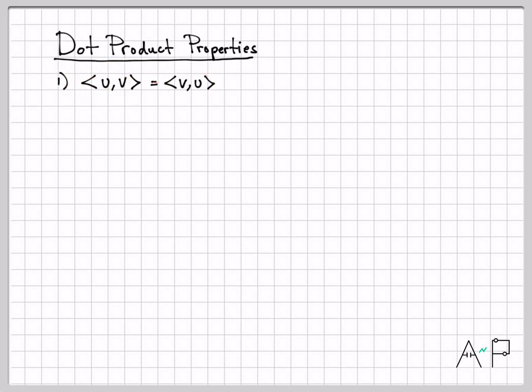This was our property one of an inner product. It doesn't matter which order that we call the inner product. So what does that mean for the dot product? That means whether I do u dot v or v dot u, I get the same answer.